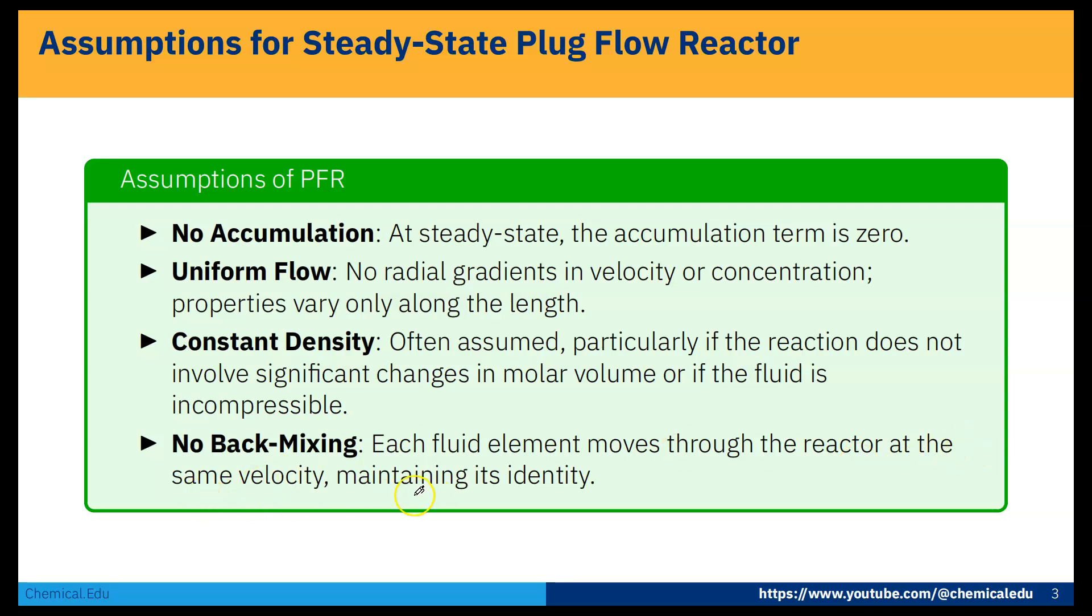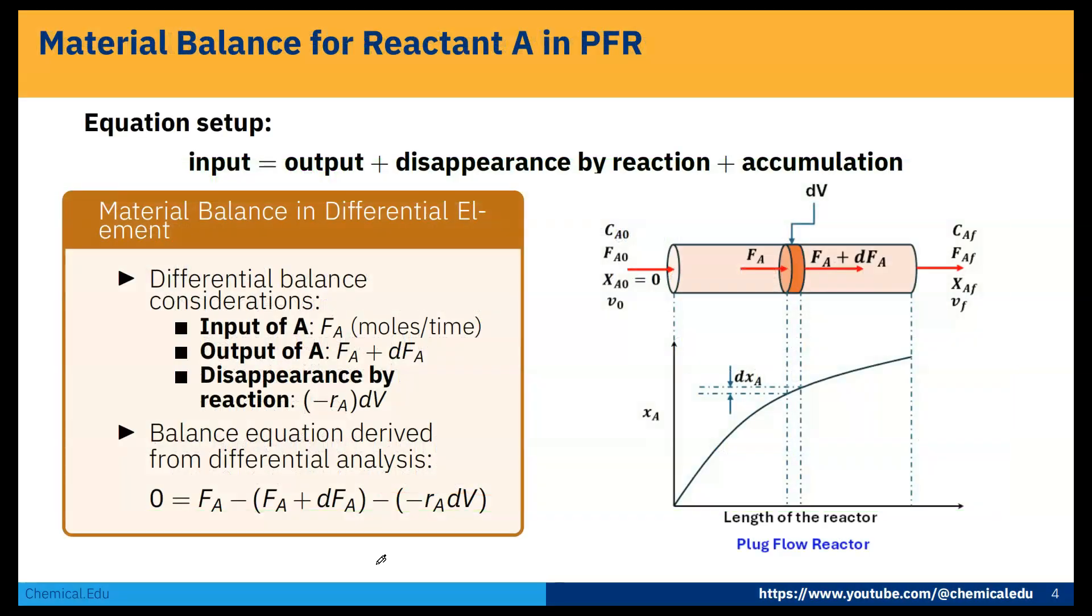We already know the mass balance equation: input of mass is equal to output of mass plus disappearance by reaction plus accumulation. Now as we are taking the differential control volume, across this control volume we have to do the mass balance. So differential balance consideration: input of A, that is FA moles per time, output of A, that is FA plus dFA, and disappearance by reaction.